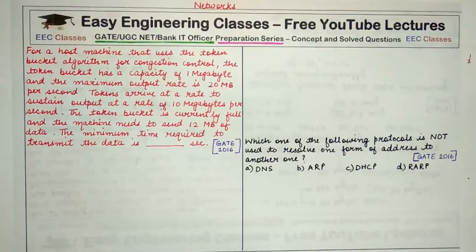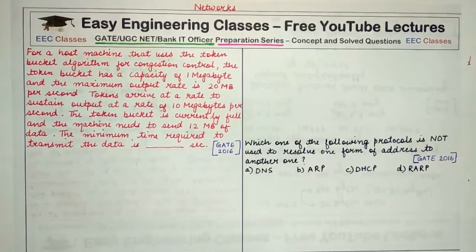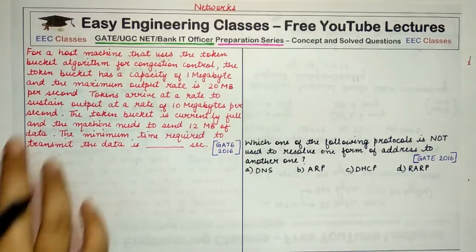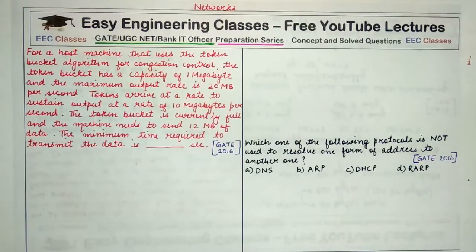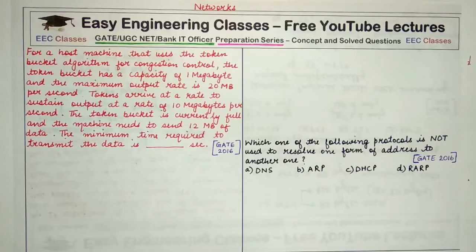This question is for a shop host machine that uses the token bucket algorithm for congestion control. The token bucket has a capacity of 1 megabyte and the maximum output rate is 20 megabytes per second. Tokens arrive at a rate to sustain output at 10 megabytes per second, the token bucket is currently full, and the machine needs to send 12 MB of data. The minimum time required to transmit the data is what we have to find out.